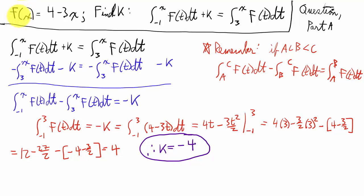Reading out the question, part a: f of x equals 4 minus 3x. Find k such that the integral from negative 1 to x of f of t dt plus k equals the integral from 3 to x of f of t dt.